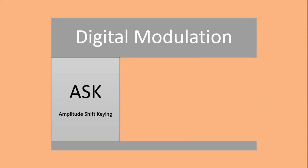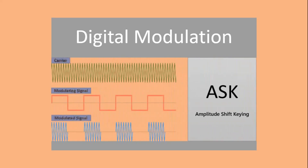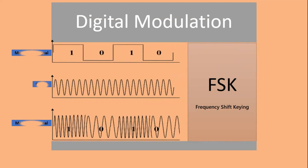In amplitude shift keying (ASK), the amplitude of the modulated signal changes according to the digital bit stream. In frequency shift keying (FSK), the frequency of the modulated signal changes according to the digital bit stream, where binary one is represented by one frequency and binary zero is represented by another frequency.